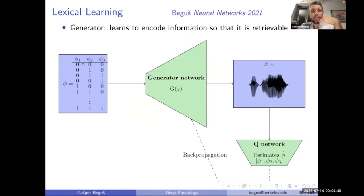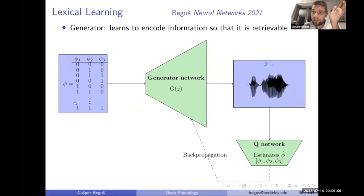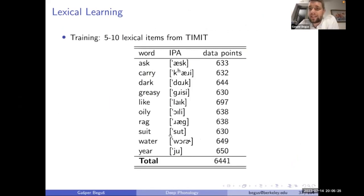The FIW-GAN extension — Featural Information Wave GAN — uses a binary code instead of one-hot encoding. The binary code allows both holistic learning, where each code represents a lexical item, and featural encoding, where each bit represents sublexical information. The generator handles generation and the Q-network handles lexical learning, figuring out what unique code the generator had when producing the output.